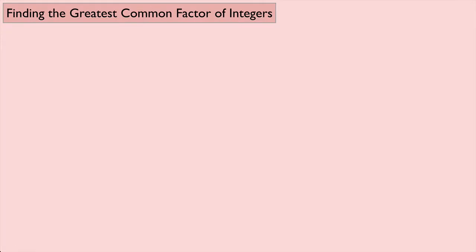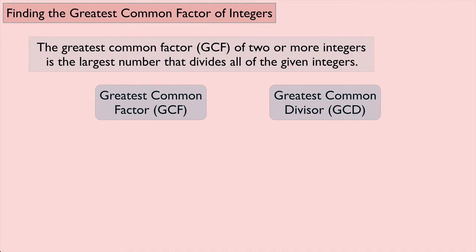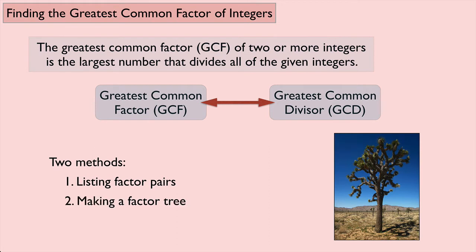Let's review how to find the greatest common factor of a set of integers. The greatest common factor, which we call the GCF, of two or more integers is the largest number that divides all of the given integers. The GCF is also known as the greatest common divisor, the GCD, and these are interchangeable. There are two methods for finding the GCF: we can list the factor pairs, or we can make a factor tree.